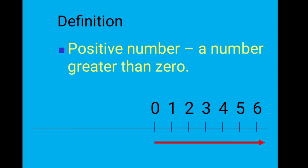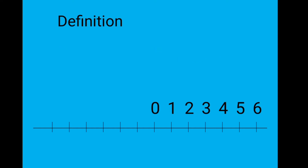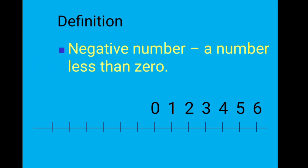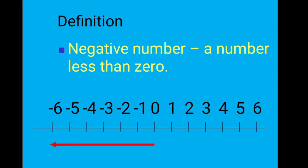Next concept: negative number. A negative number is a number that is less than zero. The numbers less than zero are represented using a minus symbol — negative symbol — so: minus one, minus two, minus three, minus four, minus five, minus six, and so on.